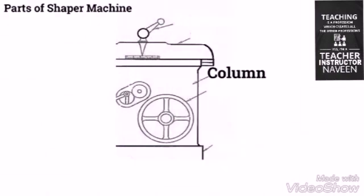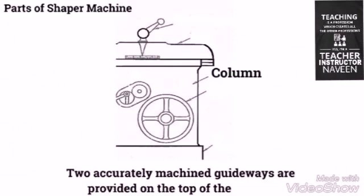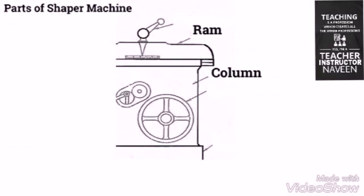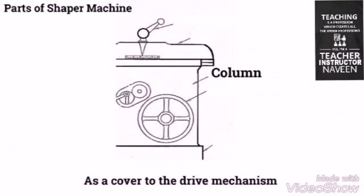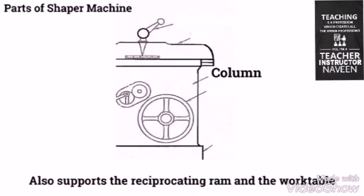The column is made of cast iron, which is box-like and is mounted on the base. Two accurately machined guideways are provided on the top of the column on which the RAM reciprocates. The column acts as a cover to the drive mechanism and also supports the reciprocating RAM and the work table.